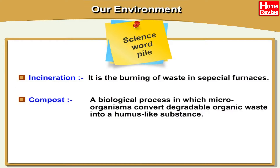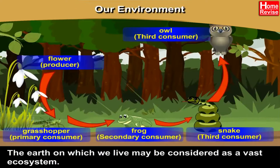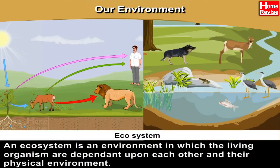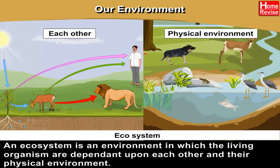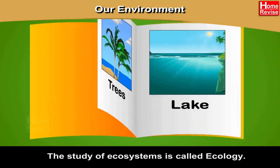Compost: A biological process in which microorganisms convert degradable organic waste into a humus-like substance. The earth on which we live may be considered as a vast ecosystem. An ecosystem is an environment in which the living organisms are dependent upon each other and their physical environment. The study of ecosystems is called ecology.